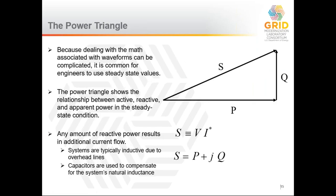These three types of power are related to one another and are important when rating electrical equipment. While active power P is what we really want, some amount of reactive power Q also flows in the system. As a result, apparent power S is the hypotenuse of P and Q, since they are at right angles. The amount of current that actually has to flow down the conductors is based on S. So while we may only want active power P, supplying reactive power draws more current, which heats things up. This means either larger equipment is needed or you must consider its impact on equipment lifetime.